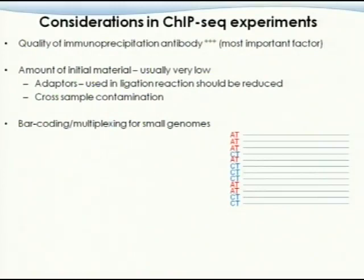For the SOLiD platform, you can barcode up to 96 samples, though 16 is quite stable. Illumina supports about 12 barcodes currently, but they are expanding this capacity.